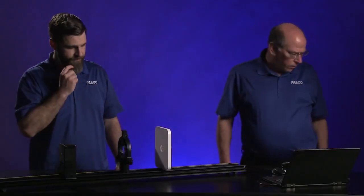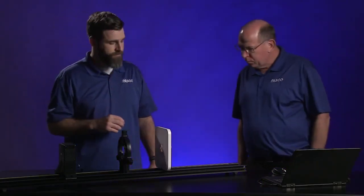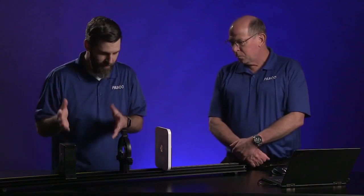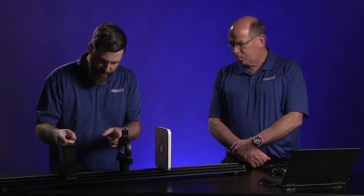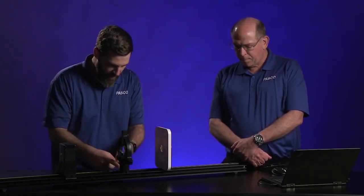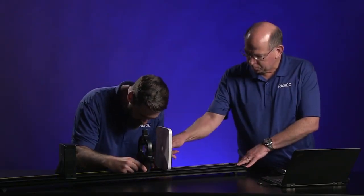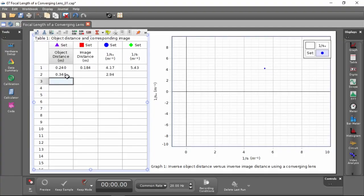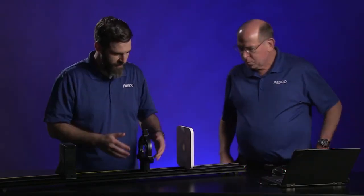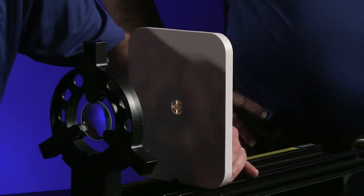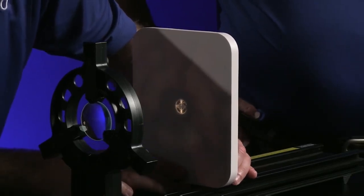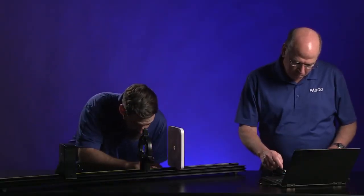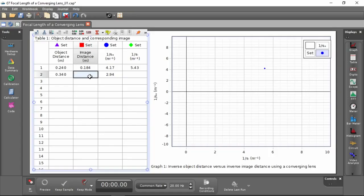You got that? We should maybe move it apart another 10 centimeters or so. We're going to collect some more data to help determine this relationship graphically. Let's move this - so 24, we'll do 34, so we'll add 10 centimeters. Moving it made the image go out of focus, so we got to figure out what the new image distance is. That looks about the most focus, and that is 10, 11, 12, 13, 14, 15 centimeters.